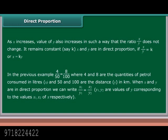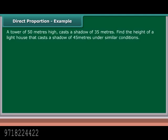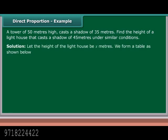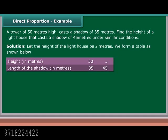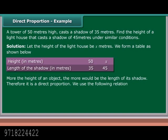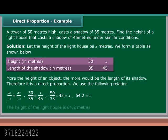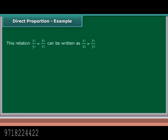Example 2: A tower of 50 meters high casts a shadow of 35 meters. Find the height of a lighthouse that casts a shadow of 45 meters under similar conditions. Solution: Let the height of the lighthouse be X meters. We form a table. More the height of an object, more would be the length of its shadow — therefore it is a direct proportion. Using X₁/Y₁ = X₂/Y₂: 50/35 = X/45, so X = (50 × 45)/35 = 64.2 meters. The height of the lighthouse is 64.2 meters.